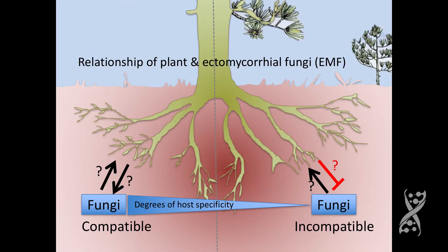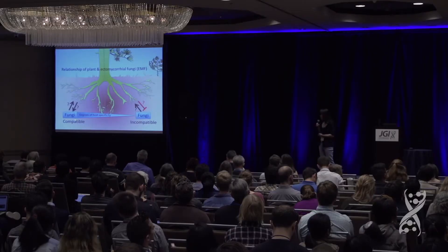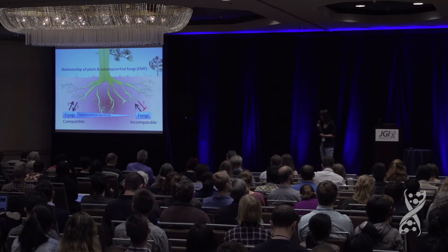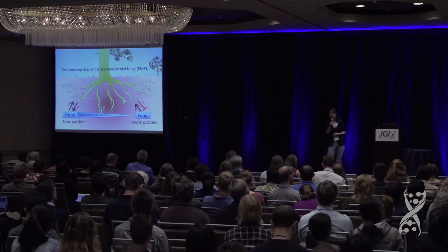We started to think about the interesting interactions between Suillus and Pinus that contribute to their compatibilities. We believe these different degrees of host specificity contribute toward a spectrum, from compatible interactions toward incompatible interactions. We are really curious about what kinds of key drivers are driving such compatibility, and how it affects symbiotic efficiency, including nutrient cycling.